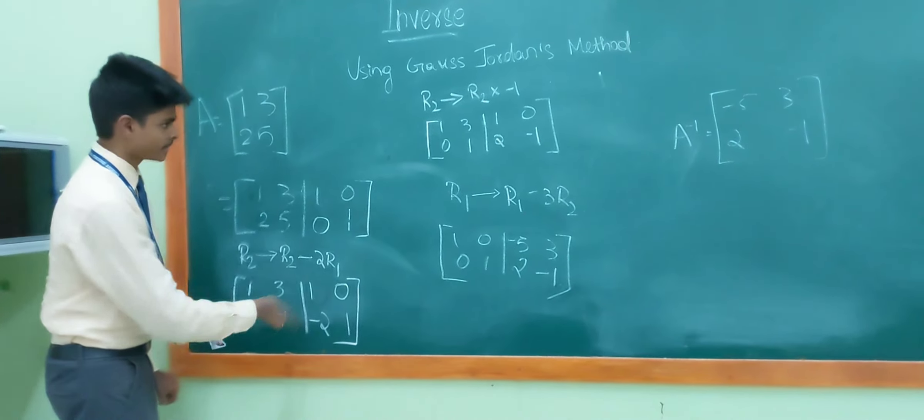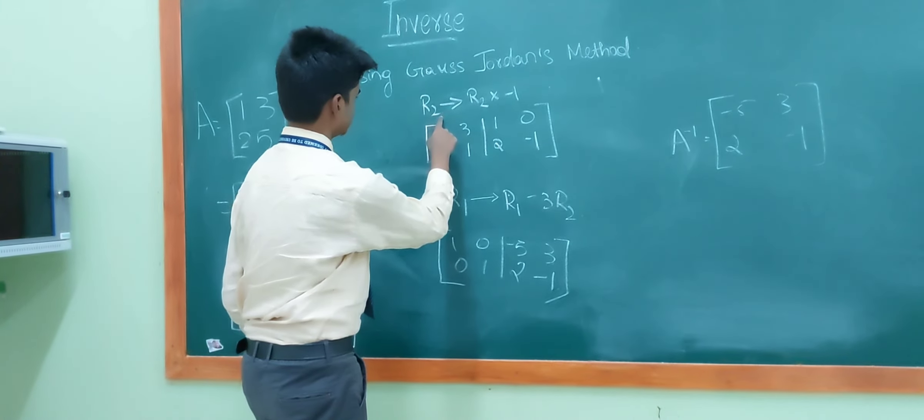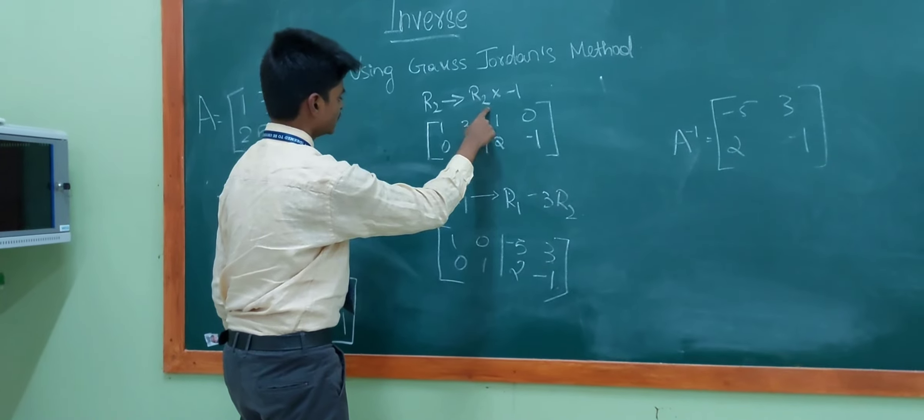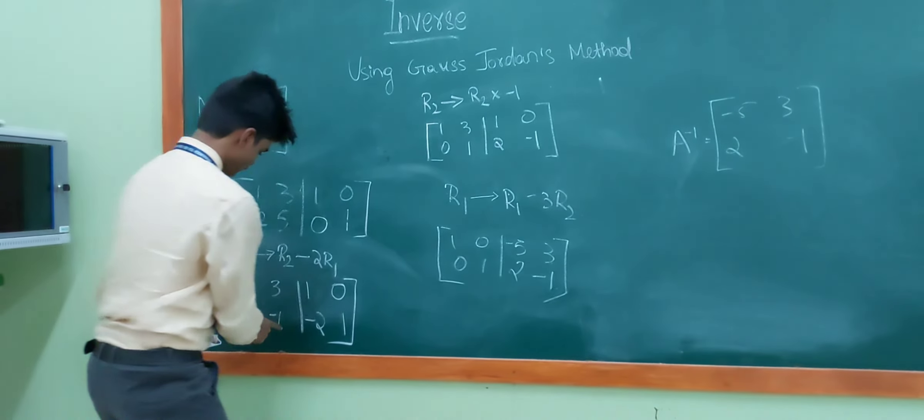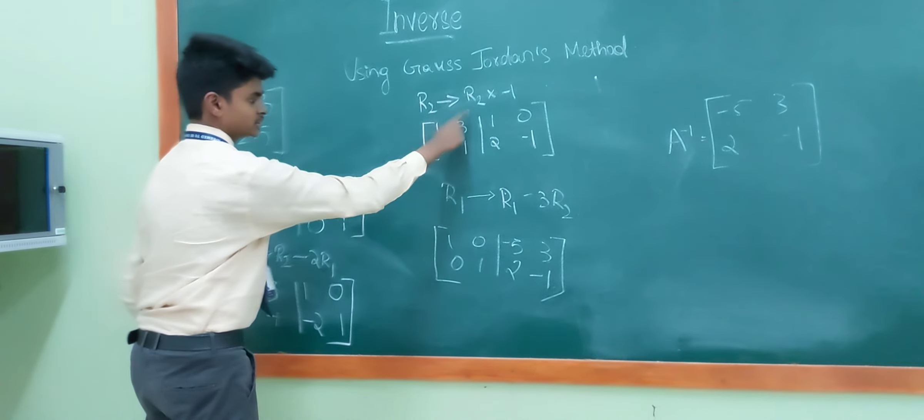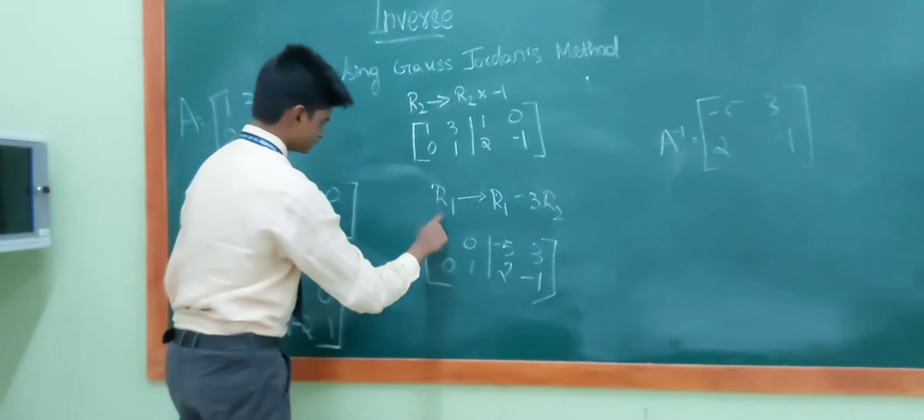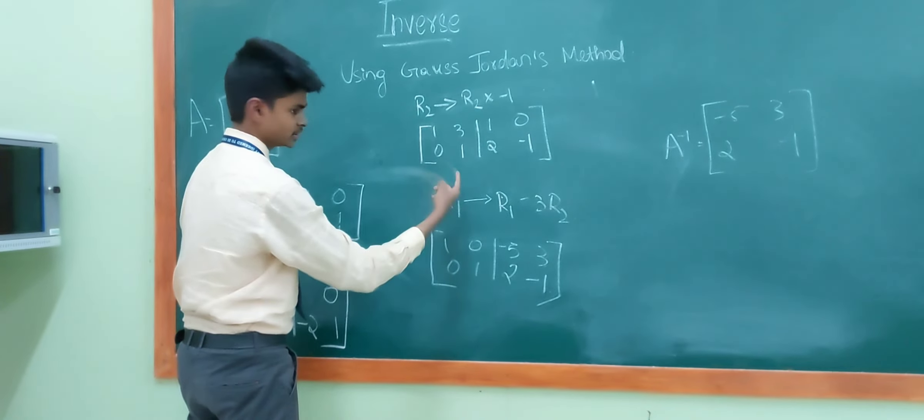Now, we will jump into the next row operation. That is r2 is equal to r2 into minus 1. And, we will convert the minus 1 over here to 1 by using this row operation. And, after doing this, we will go to the third row operation.